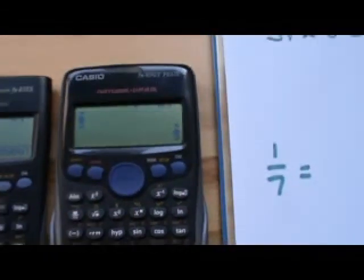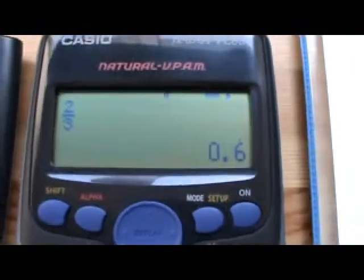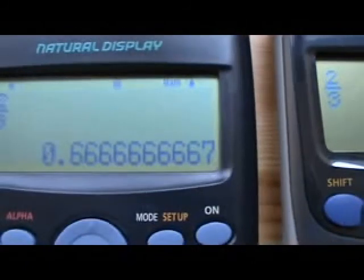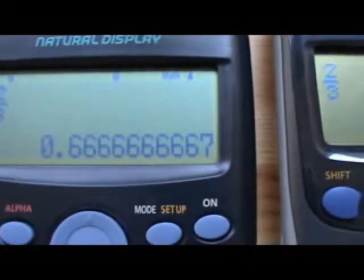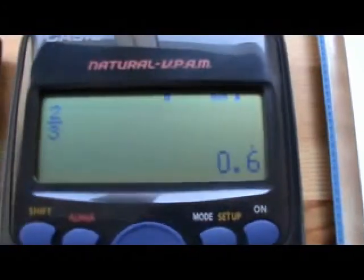If I now press the SD button, that gives us a different answer again. That tells us 0.6 with a dot above it. So it's only technically this last calculator that's got the sum exactly right. Because the right answer is 0.6 recurring. The first calculator, 0.6666, it's not rounded the last figure up to a seven. The second figure has rounded the last figure up to a seven. But as you can see, that's not completely right because the correct answer is 0.6 recurring.